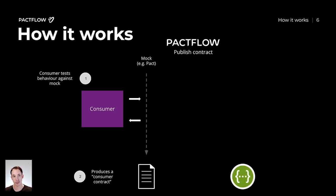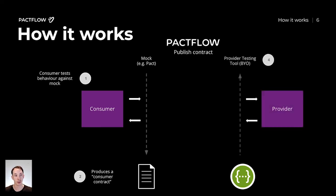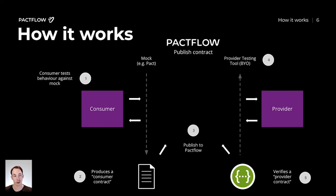That contract takes the form of a pact file — we call that the consumer contract. On the provider side, we actually start with the provider contract, something like an OpenAPI spec. Now that we have our OpenAPI spec, whether that was generated by hand or automated by code, we're going to do some provider testing here to make sure that our provider code base is compatible with that OpenAPI spec, or our provider contract. We call this step verifying the provider contract.